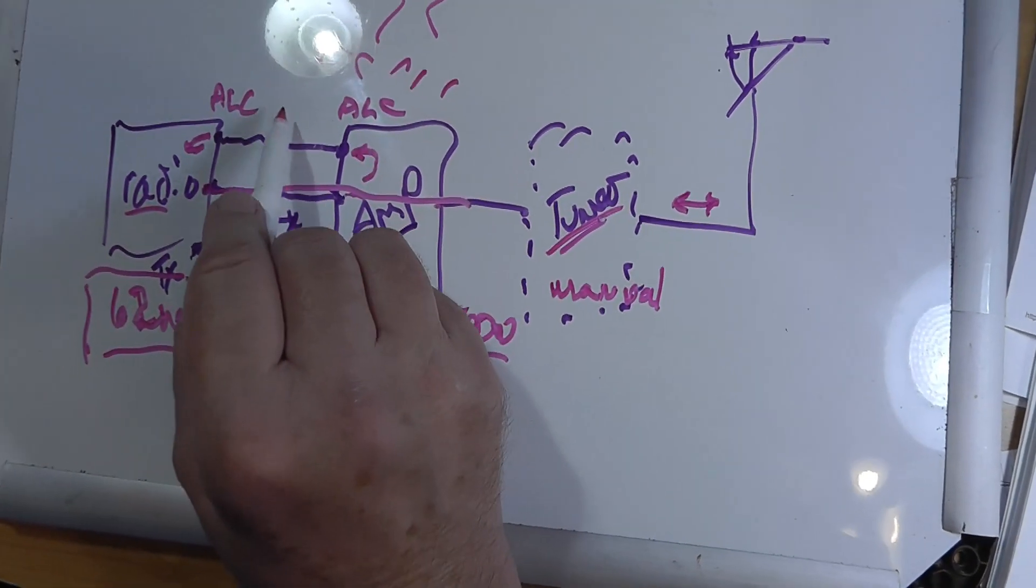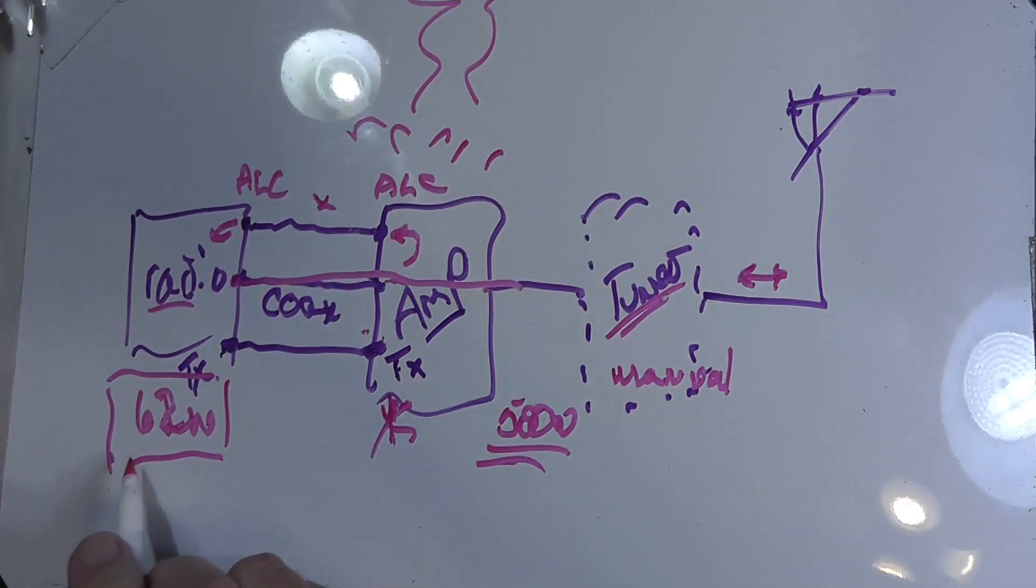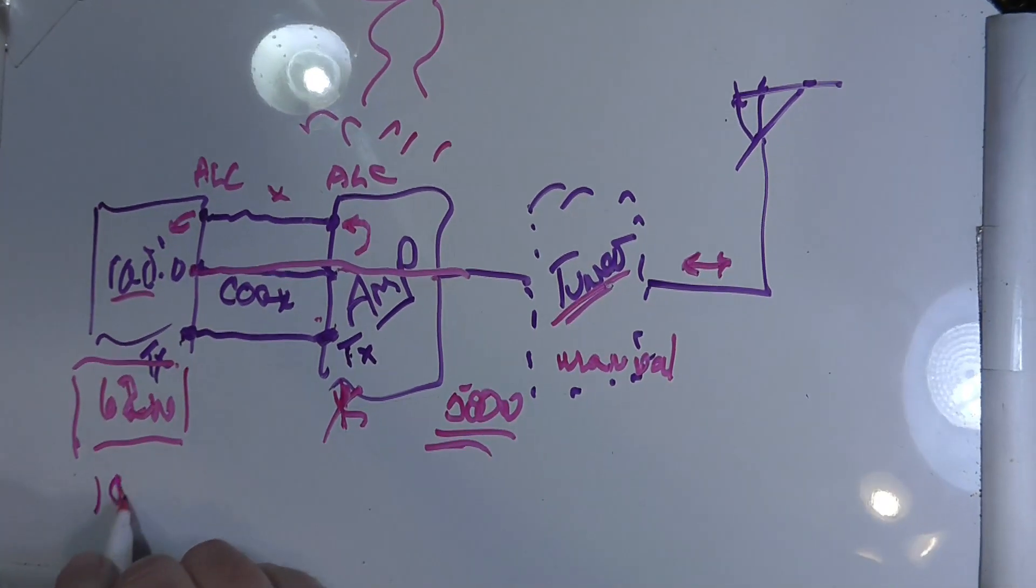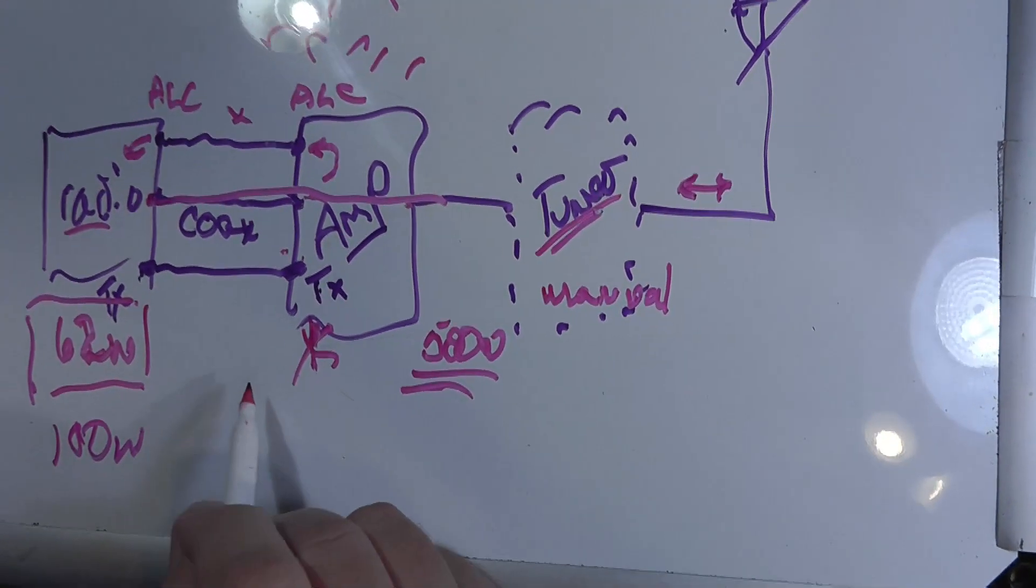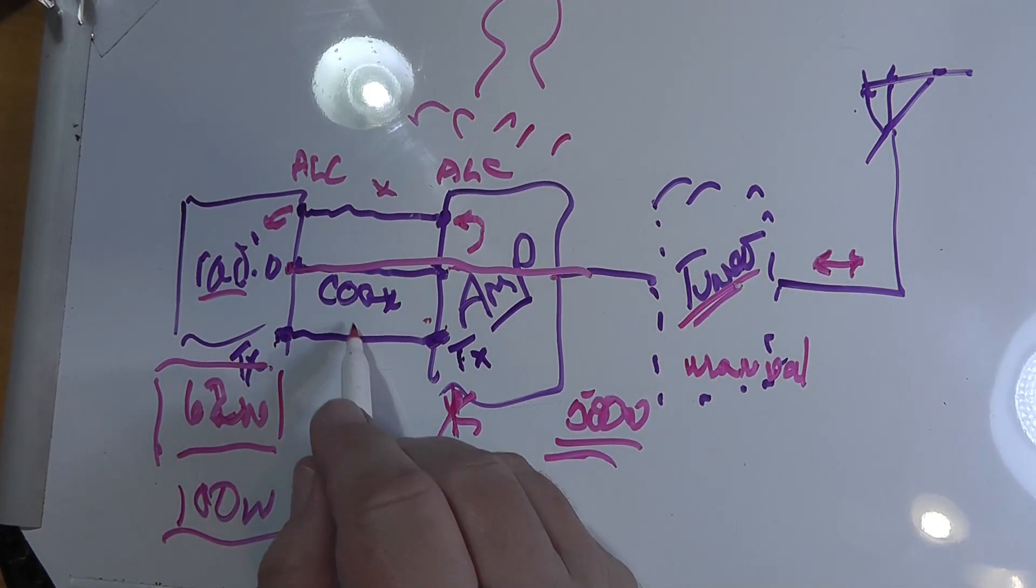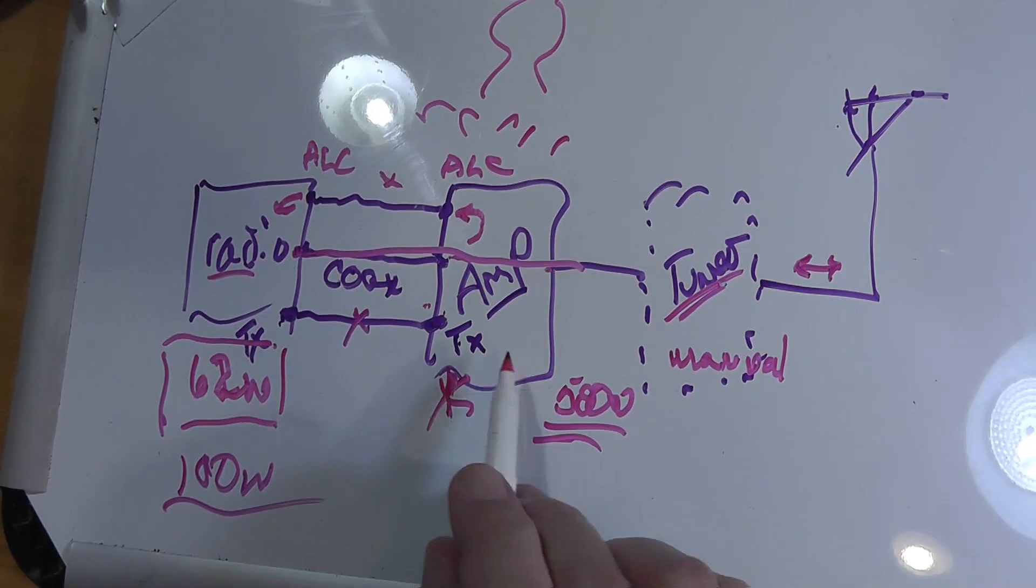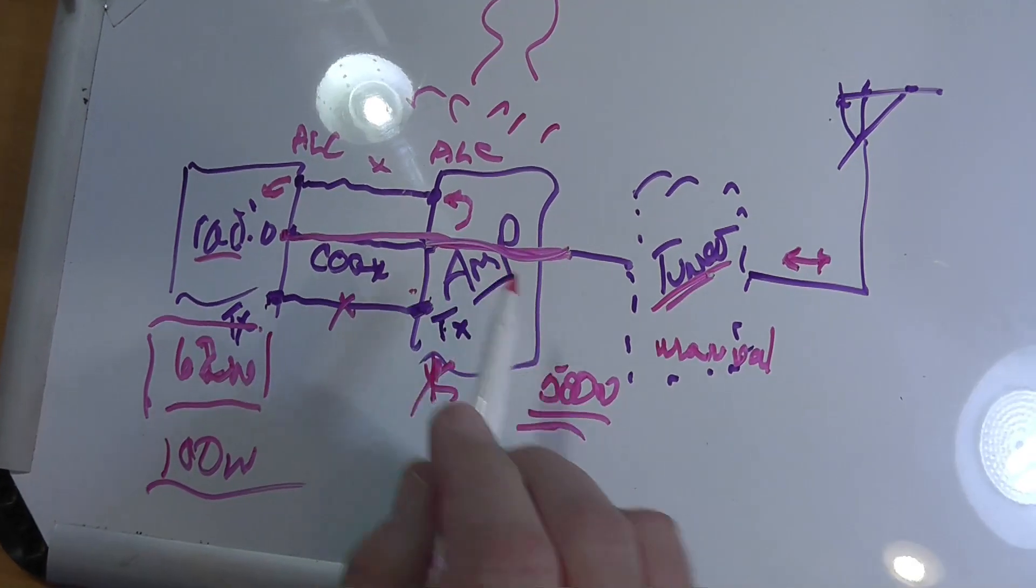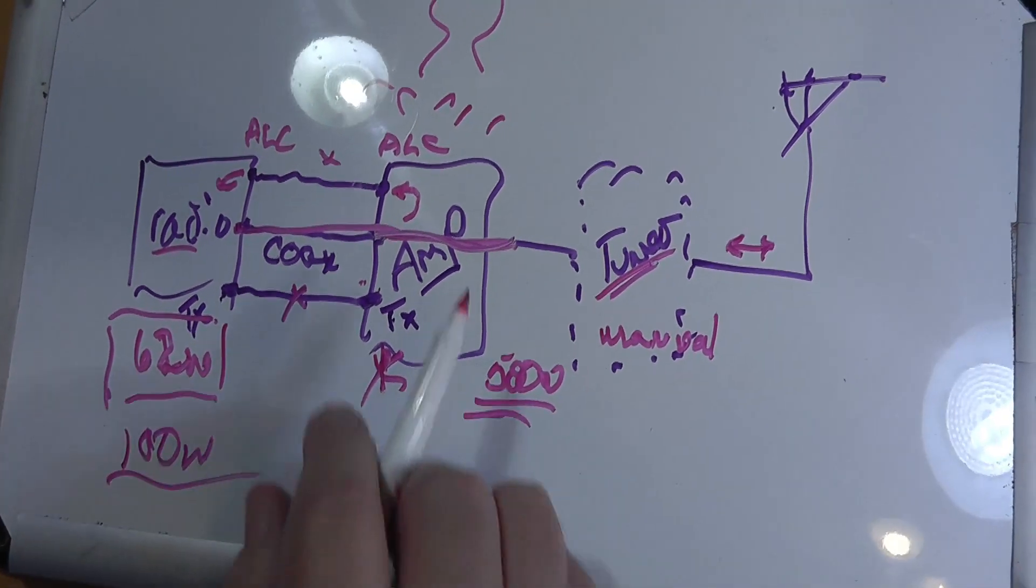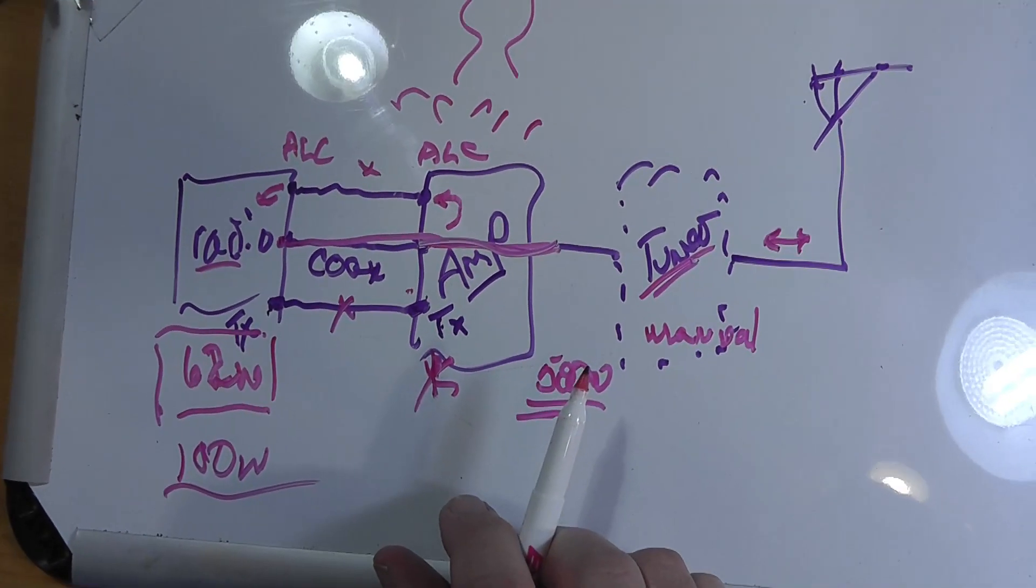Now, if the ALC line becomes disconnected, you will note that the power out on your radio will jump up to the full amount. That's not necessarily good for the amp. So keep an eye on that. If the transmit becomes disconnected, it won't go into transmit. It won't amplify. It'll just do a straight through. So you'll be able to communicate, but you won't have the power that you wanted to have.